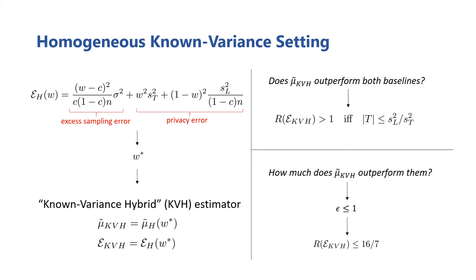Analyzing the relative improvement under these constraints reveals that it's upper bounded by approximately 2.3. So, although the KVH estimator is always better than the baselines and has theoretically unbounded relative improvement over them, in practical settings, there's a tight upper limit on what sort of improvements we can expect.